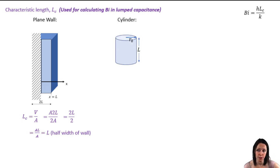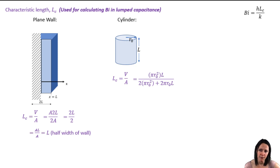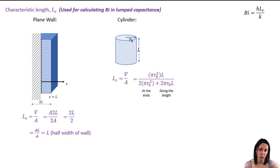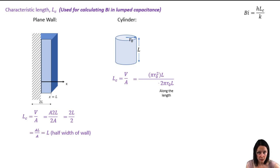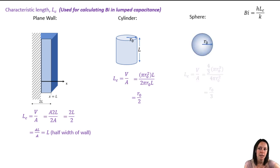This idea works for a cylinder as well. We take our definition of the characteristic length as the ratio of the volume to surface area through which heat transfer occurs. For the cylinder, the volume is pi r₀ squared times L. On the denominator we have two terms: the first accounts for heat transfer through the area on the ends, and the second along the length. Typically the area on the ends is neglected since it's small compared to the area along the length of the cylinder. So we can simplify it down to r₀ divided by 2. For a sphere, plugging in the volume and surface area of the sphere gives r₀ divided by 3.